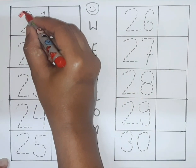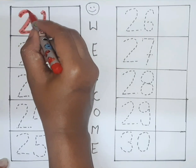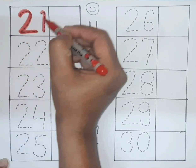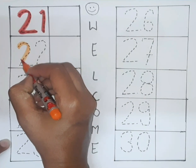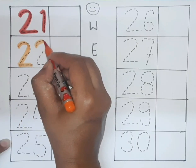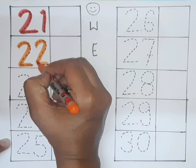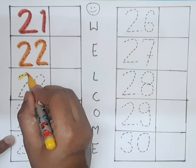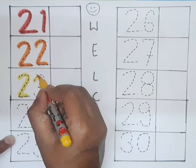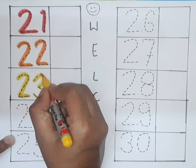Let's start from twenty one. This is twenty one. Next is twenty two. This is twenty two. What comes next? Twenty three. This is twenty three.